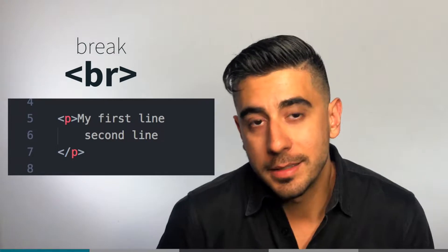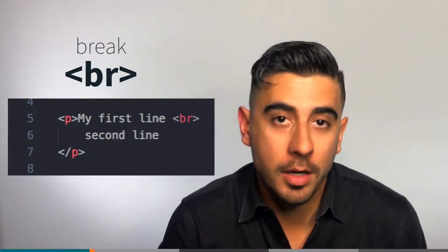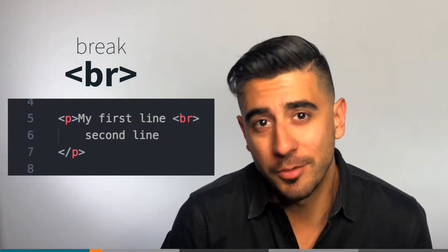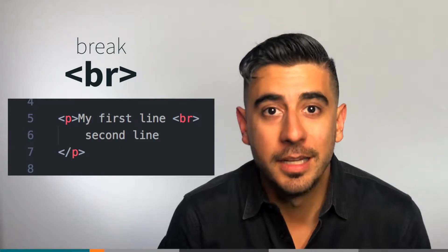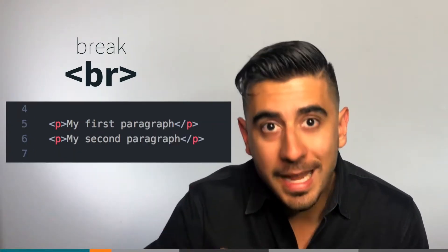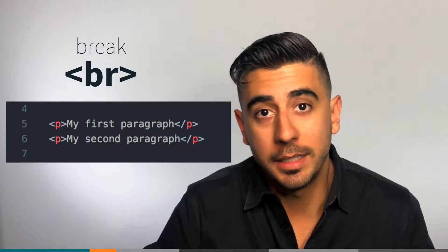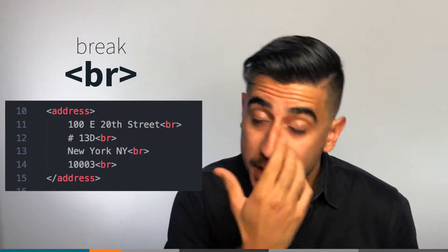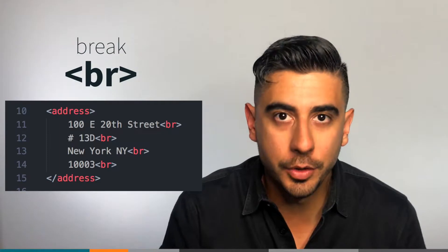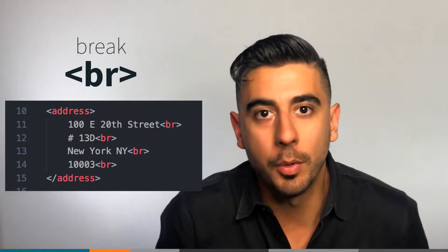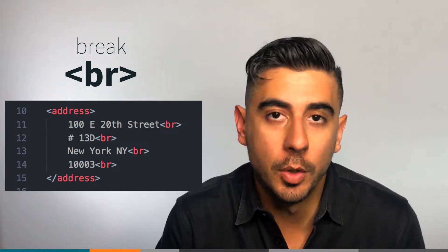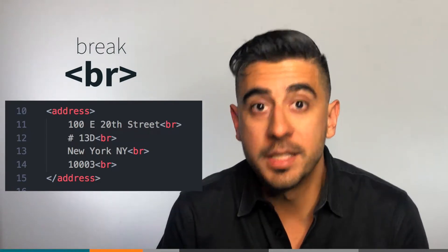If you have to go to the next line, you could use a BR tag. We just talked about semantics and BR is not really good practice — you're better off using multiple P tags. But say you had an address tag, which is semantically correct, and you want it to go to the next line. You don't want to use multiple address tags, so you could use a BR. It is available.